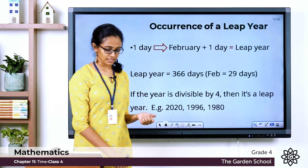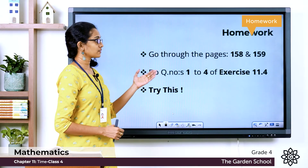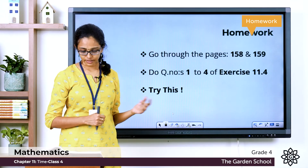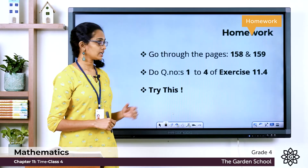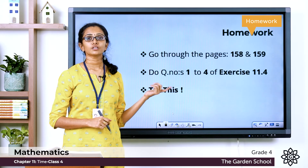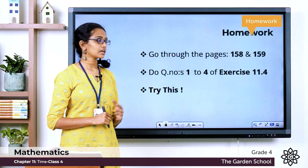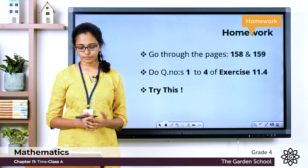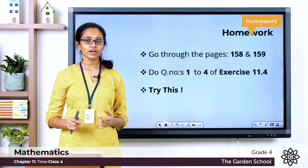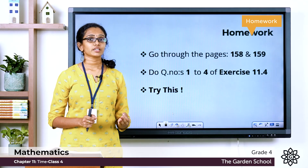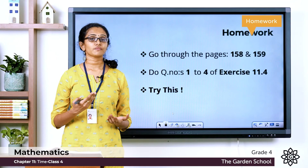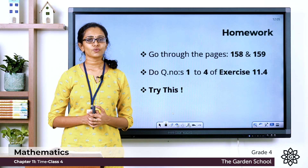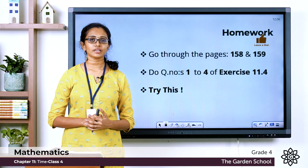I hope the concepts we learned today are clear to you. Go to pages 158 and 159 to read about these topics. Then move on to exercise 11.4 on page 159 and complete questions 1, 2, 3 and 4 in your notebook. On the same page, under the heading 'Try This', circle the leap years from the list given by checking their divisibility by 4. Once done, take a picture and send it to us on Teams. That's all for today — we'll see you in the next class with a new topic. Bye!